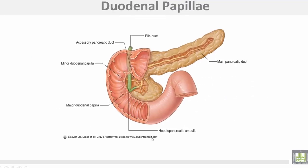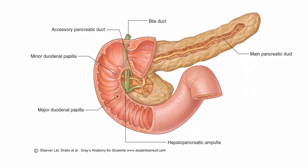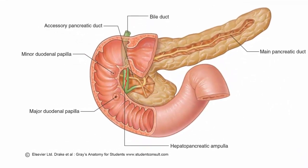This shows the bile duct and the pancreatic duct converging at the major duodenal papilla.